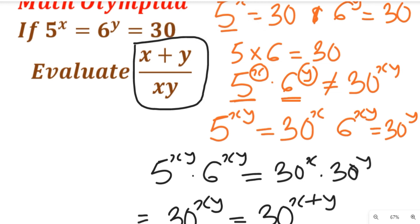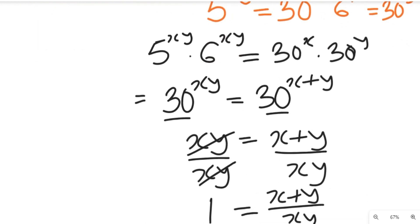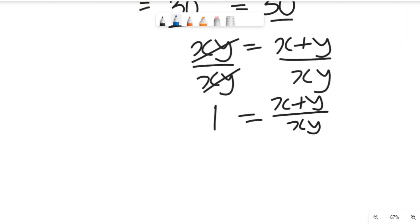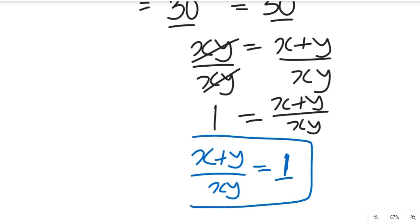Now let's go back to our solution. From our solution, we have come to see that x plus y divided by xy is equal to one. This is the solution to that exponential equation that is given to us above.